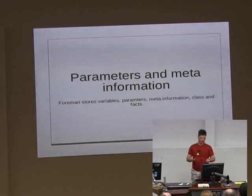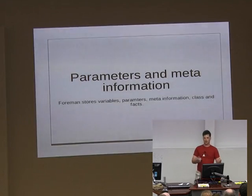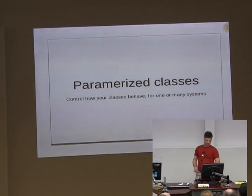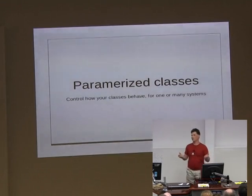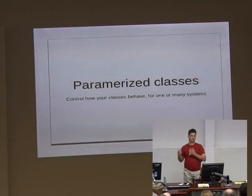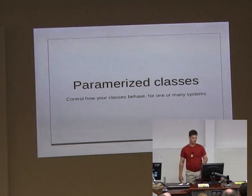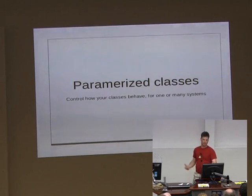When you're defining information about systems, you can define parameters, meta information, and which classes. It also supports parameterized classes - which Puppet users will know - and they're really useful because classes from places like PuppetForge and GitHub are often generic. They need to be customized a little bit for your environment, and you don't want to edit the actual source code of the class; they're designed to take some parameters.